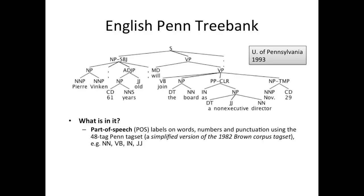Let's look at an example. This is the very first sentence in the English Penn Treebank, the Wall Street Journal section. You get a sentence with names like P.F. Income, and these are part-of-speech tagged. NNP means a proper noun. You get numbers, punctuation — punctuation is easy to tag because the tag for punctuation is the same as the punctuation itself. You also get common nouns: NN is common noun, NNS is the plural form.